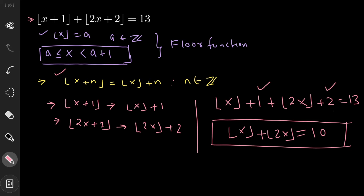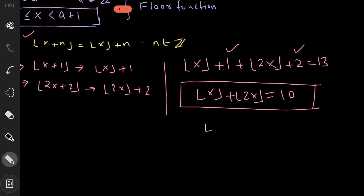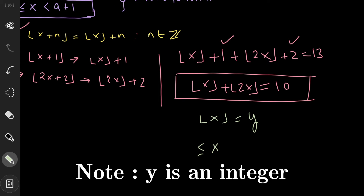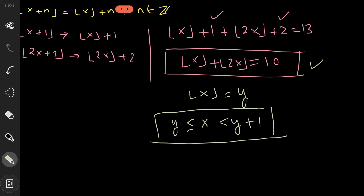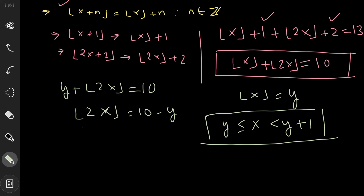To solve this, we substitute floor(x) = y. By the definition of the floor function, if floor(x) = y, then y ≤ x < y + 1. Replacing floor(x) with y in the equation gives y + floor(2x) = 10, so floor(2x) = 10 − y. Since y is an integer, 10 − y is also an integer.